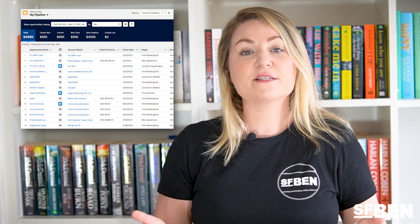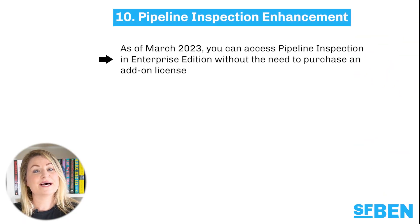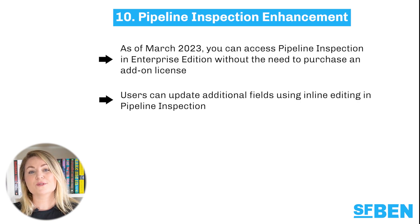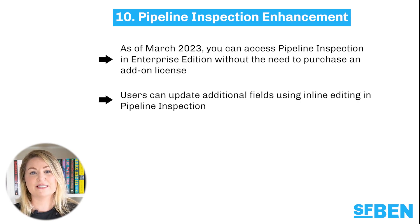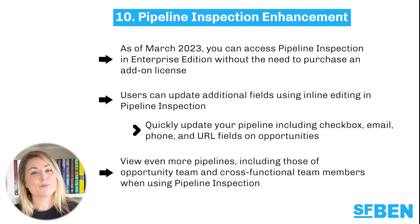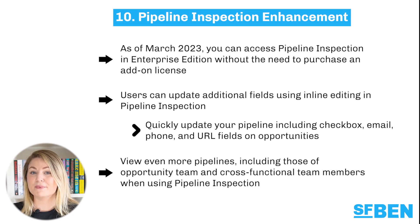Next, let's dive into the plethora of updates for pipeline inspection. As of March 2023, you can access pipeline inspection in Enterprise Edition without the need to purchase an add-on license. Users can also benefit from more inline editing on opportunities — for example checkbox, email, phone and URL fields. You can also view even more pipelines, including those of opportunity team and cross-functional team members.